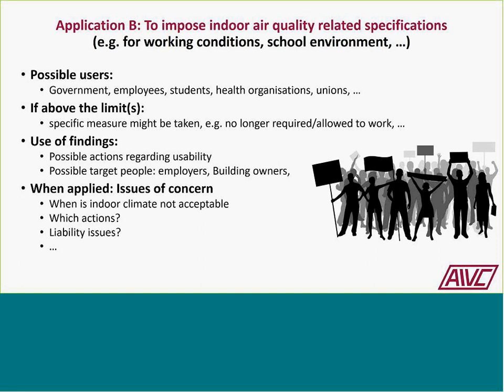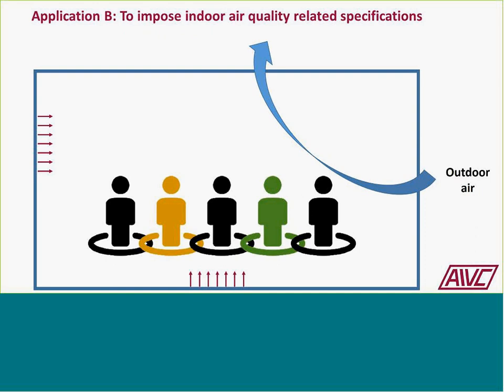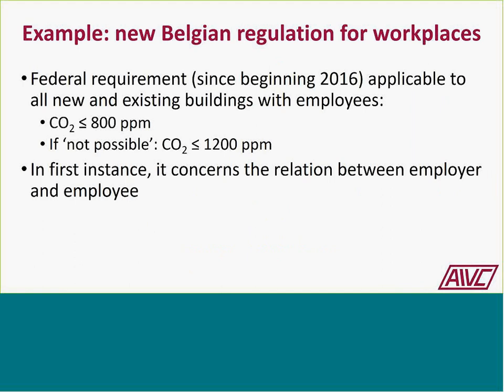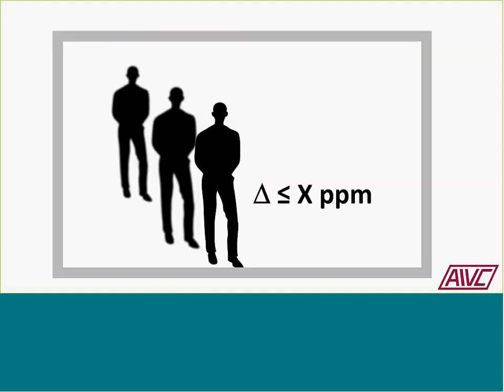When applying metrics for use in practice, key issues of concern include when is indoor climate unacceptable, what actions should be taken based on measured values, and what about liability. For example, Belgium has a 2016 regulation on workplaces stating that CO2 levels should stay below 800 ppm, and where that is not possible, should not exceed 1200 ppm, with specific implications for the employer-employee relationship.